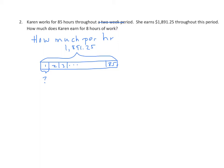So we have $1,891.25, and we know that that's divided into 85 parts. Of course, we're not going to make a diagram with 85 boxes, but we're going to represent it this way. What we don't know is how much per hour. We're taking our $1,891.25 and we're splitting it into 85 hours.